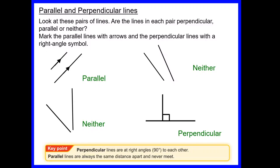The key point from this part of the lesson: perpendicular lines are at right angles — 90 degrees — to each other, and parallel lines are always the same distance apart and never meet. It's worth pausing the video now and making a note of those in your book.